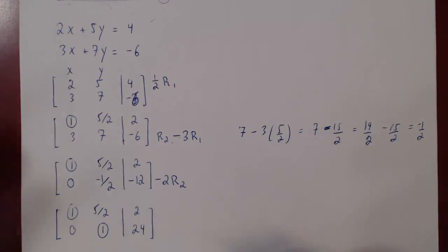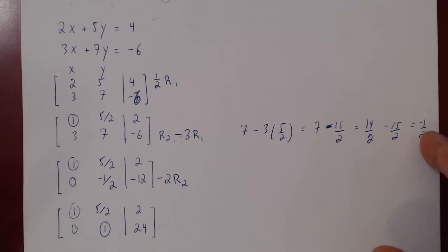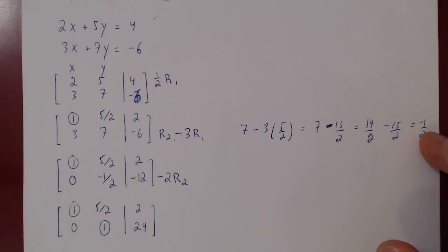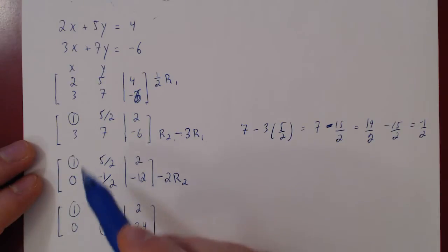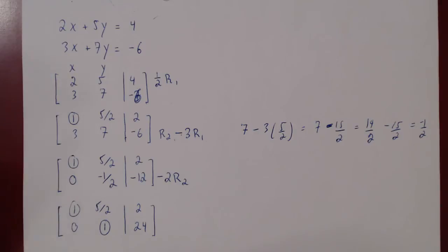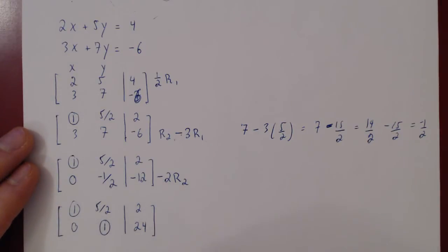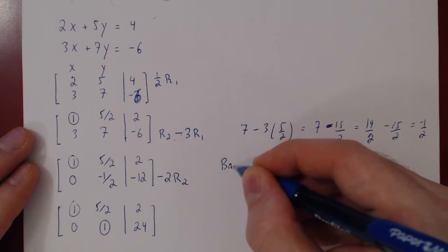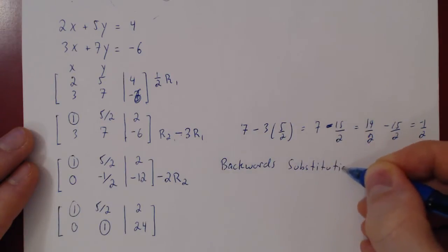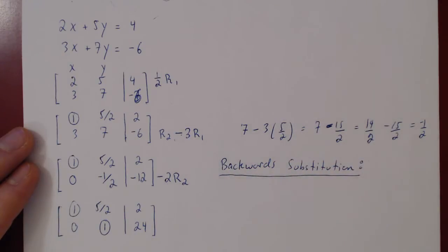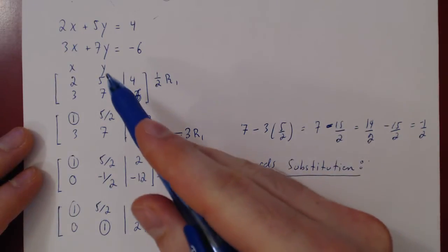Now we've reached the bottom row. We have two options: backwards substitution or Gauss-Jordan elimination. We have two variables, x and y, and they are both leading variables since they both have a leading 1. When all variables are leading, this always implies a unique solution. When you have a unique solution, you should always use backwards substitution. The name gives it away — it is substitution performed backwards, starting from the very last variable and the very last row, working our way back up.